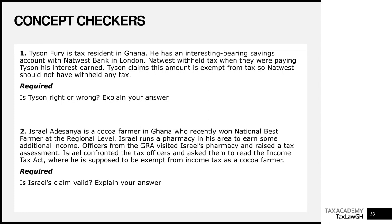Israel's claim is not valid. Israel probably thinks that as a cocoa farmer, all his income is exempt from income tax. But what the law says is that it's the income from cocoa of a cocoa farmer that is exempt. Yes, Israel is a cocoa farmer and won national best farmer, but his pharmacy is a separate business — it has nothing to do with cocoa farming. The pharmacy will be taxed as though we didn't even know he was a cocoa farmer. The exemption only covers income from cocoa farming, not any other business.